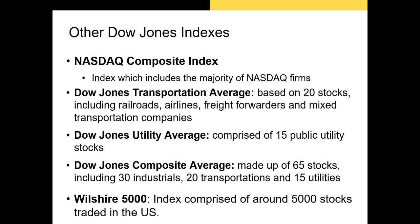There are dozens of other indexes out there. Another index you should know about is the NASDAQ Composite Index, which is a value-weighted index comprised of most of the stocks listed on the NASDAQ. In the US, the NASDAQ Composite is seen as our best metric for tracking the performance of tech stocks. We also have sector-specific indexes like the Dow Jones Transportation Average and the Dow Jones Utility Average, which each track the performance of one of the 11 sectors of the US economy.